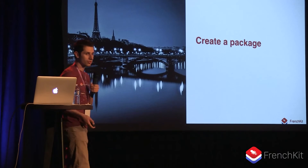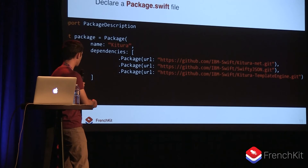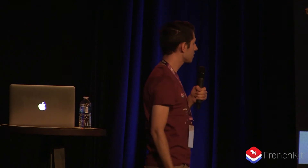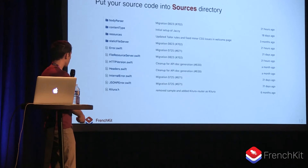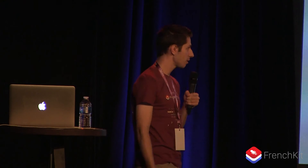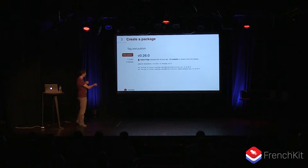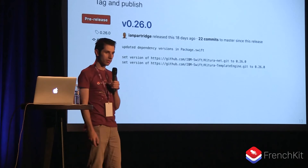The other use case is to create a package to share your code with the community. The process is quite the same as doing an app — you create a package.swift file again, but no main.swift file this time. You declare your package name and all its dependencies. Here is the package file of Kitura with three dependencies. You put all your source code into a folder named Sources — that's the SPM convention for where it looks for source code. Then you just tag and publish on GitHub and everyone can use your code.